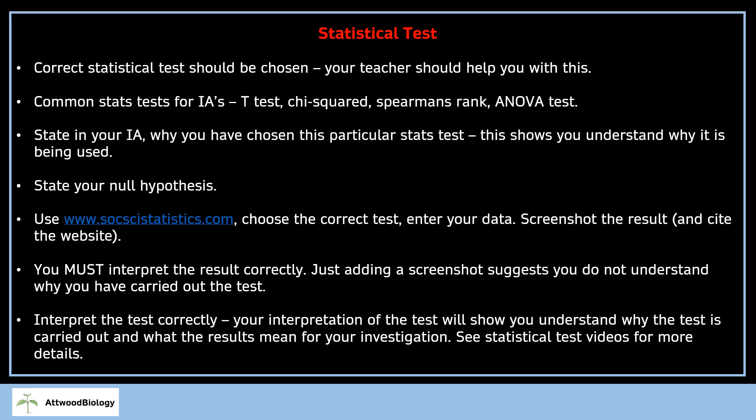Stats test. There are additional videos on how to do each stats test in far more detail with examples—by all means, watch those if you need to. You need to make sure you choose the correct statistical test, and your teacher should help you. Common stats tests are T-test, chi-squared, Spearman's rank or correlation coefficient, and the ANOVA test. You need to say in your IA why you chose a particular stats test because this shows understanding. It shows you haven't just thrown it in with no idea why. You need to state your null hypothesis.